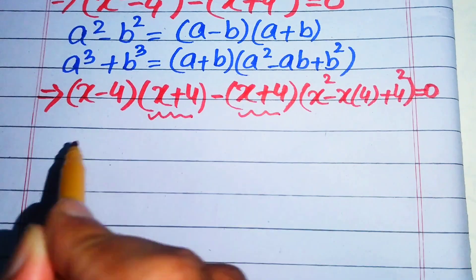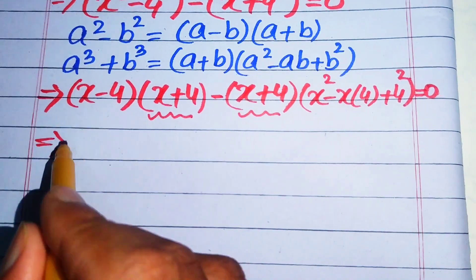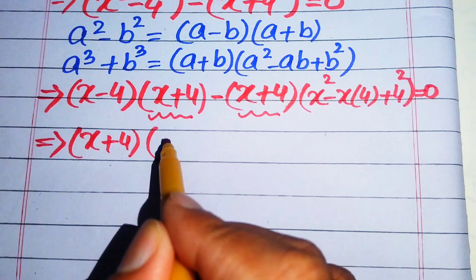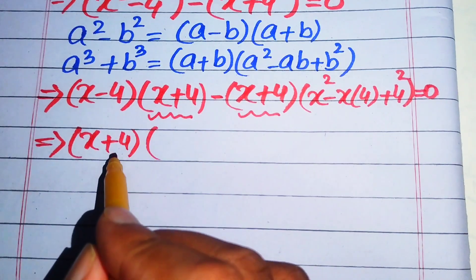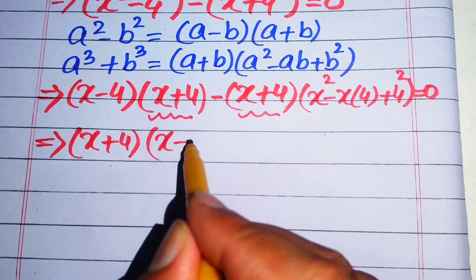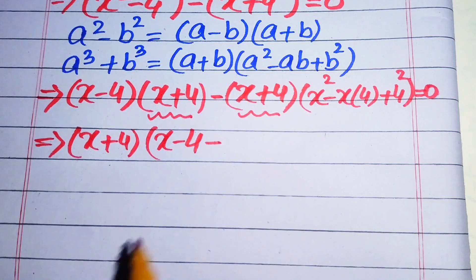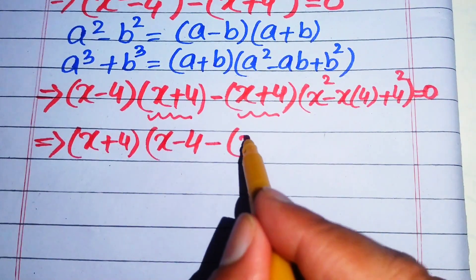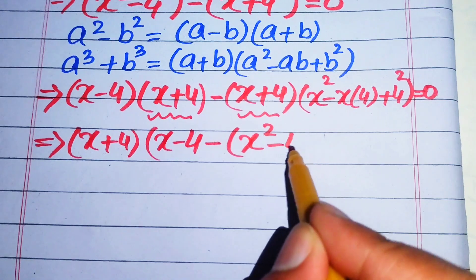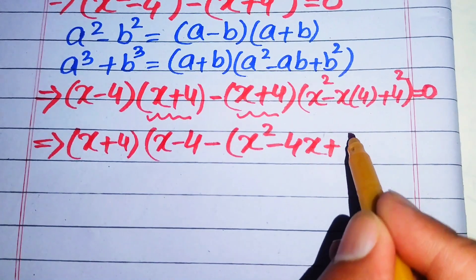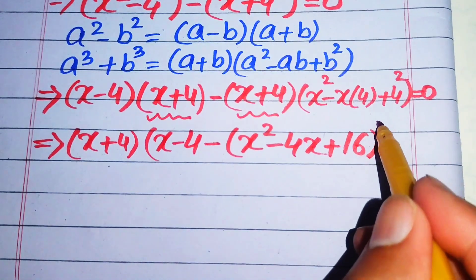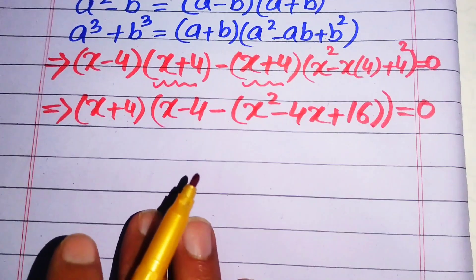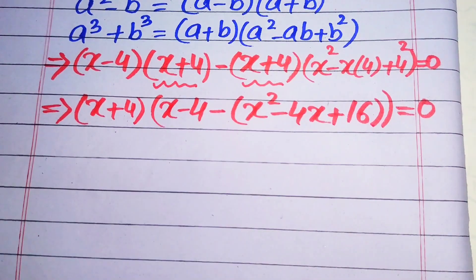We can see that x plus 4 is a common term in both parts. We take out the common factor x plus 4, and the remaining terms inside the brackets are: from the first part x minus 4, and from the second part x squared minus 4x plus 16. This whole expression equals zero.